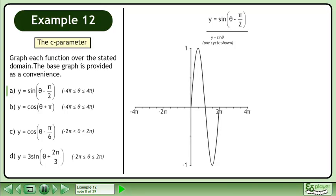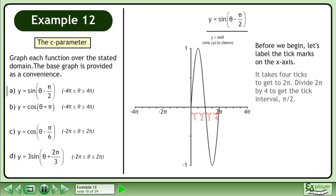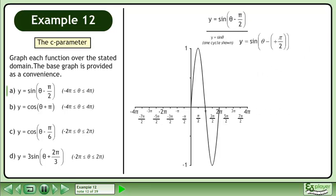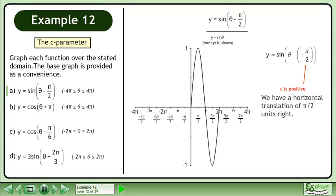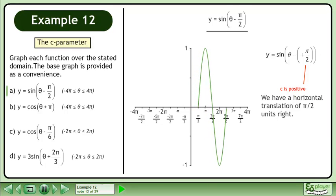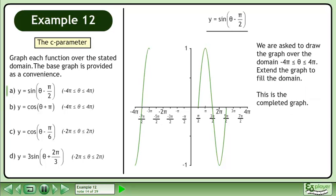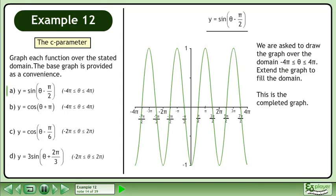Let's bring up the graph of y equals sine theta. Before we begin, let's label the tick marks on the x-axis. It takes 4 ticks to get to 2pi. Divide 2pi by 4 to get the tick interval: pi over 2. Label the ticks. Rewrite the function to get the C parameter. C equals positive pi over 2, so we have a horizontal translation of pi over 2 units right. We are asked to draw the graph over the domain where theta is between negative 4pi and 4pi. Extend the graph to fill the domain. This is the completed graph.